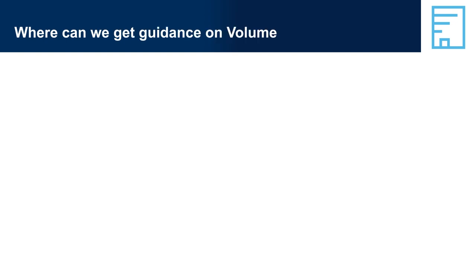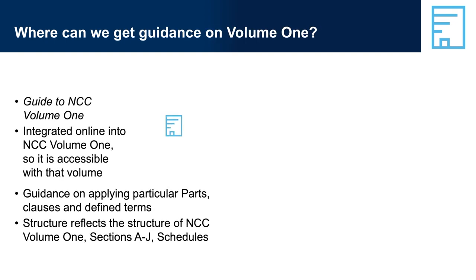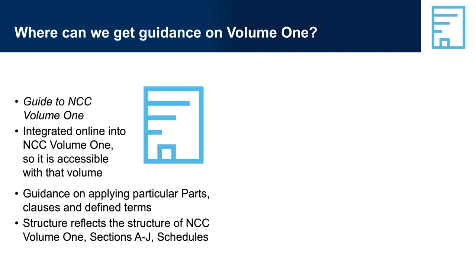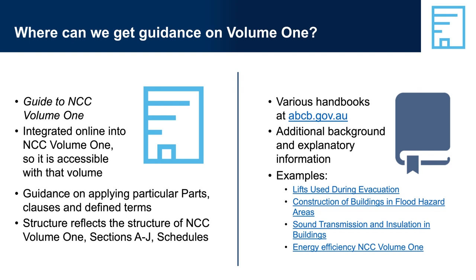Where can we get guidance on Volume 1? All of the resources shown on the slide are non-mandatory. They do not contain any provisions that must be complied with — they contain only explanatory and guidance information. All the mandatory provisions are in NCC Volume 1. The Guide to NCC Volume 1 is integrated with the online NCC Volume 1. The various handbooks are developed, updated and issued separately from the NCC Volumes and are also available on the ABCB website.